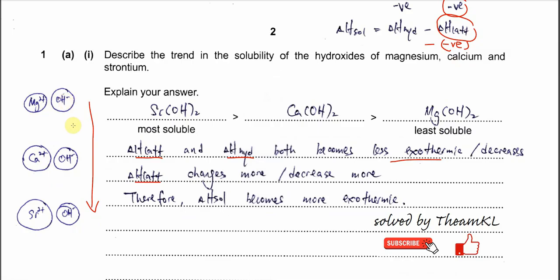The diagram shown is just to illustrate how the ions attract and form bonding — one cation with two hydroxide ions, with one hydroxide shown here just to compare sizes. It illustrates the change in cation size which affects the lattice energy.